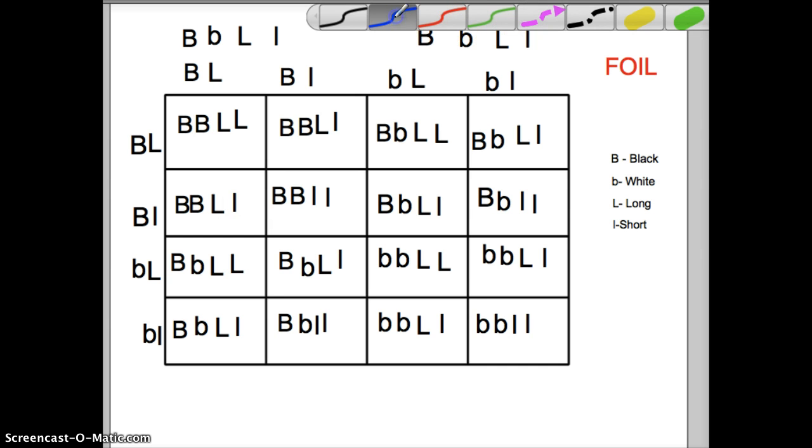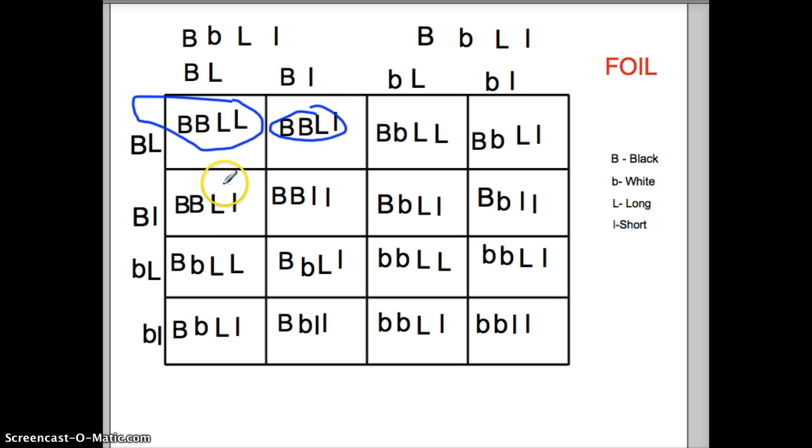Why don't we do blue? So let's look for all the ones that are black and long. So this would be black and long, black and long. I'm just actually going to put a line through, it's just going to be easier. Black and long, black and long. So you can go through and count all the ones that are black and long.